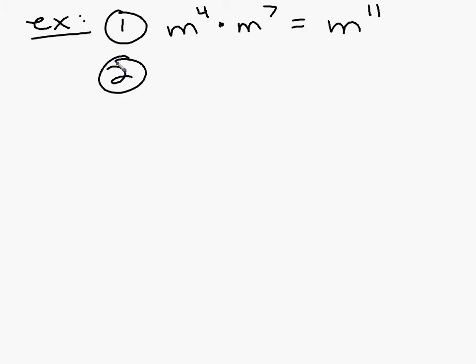What if I have n times n to the fifth? Now, we didn't talk about this. If I don't write a power up there, that power is a one. So what's one plus five? It's six. So this is n to the sixth.